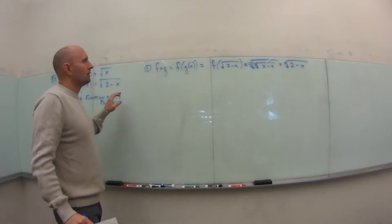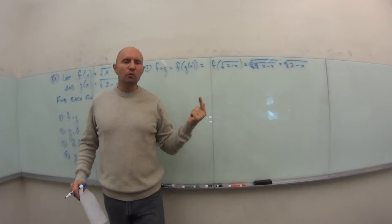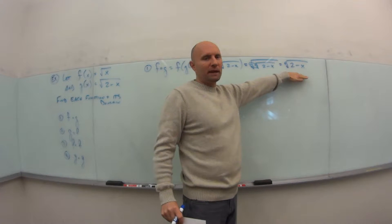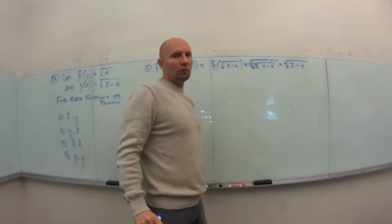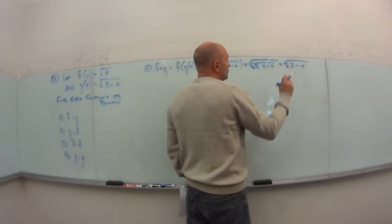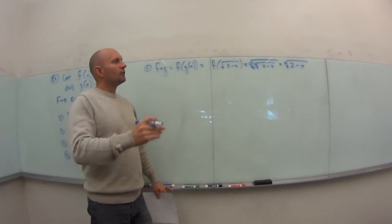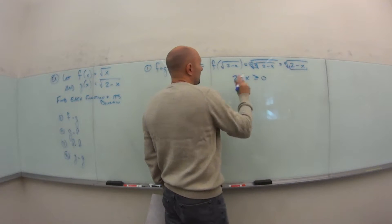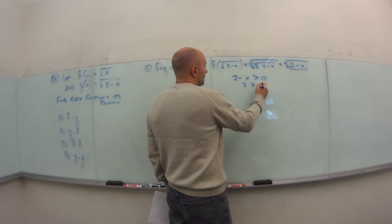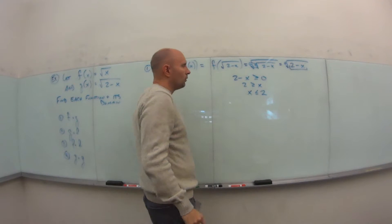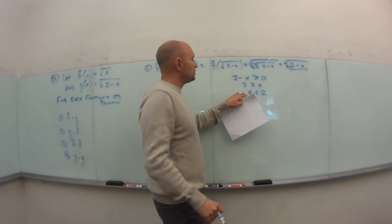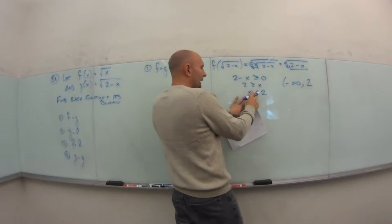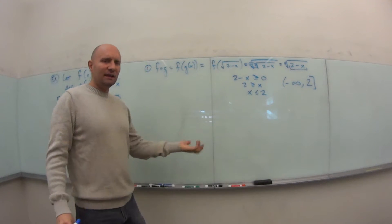Now we want the domain. For composite functions, find the composite function, then figure out its domain — we're generating a whole new function. The fourth root is even, so I need what's underneath to be greater than or equal to 0: 2 − x ≥ 0, which means x ≤ 2. In interval notation, that's (−∞, 2].